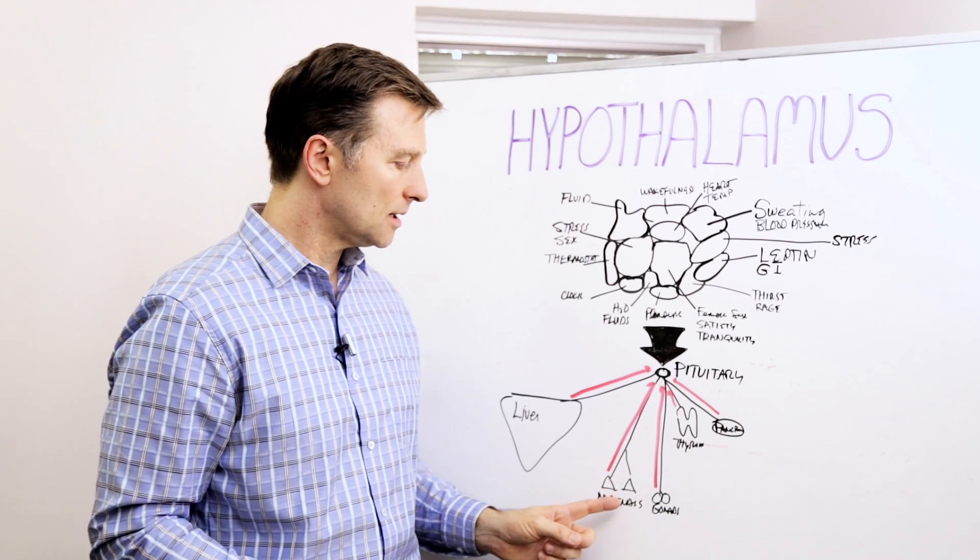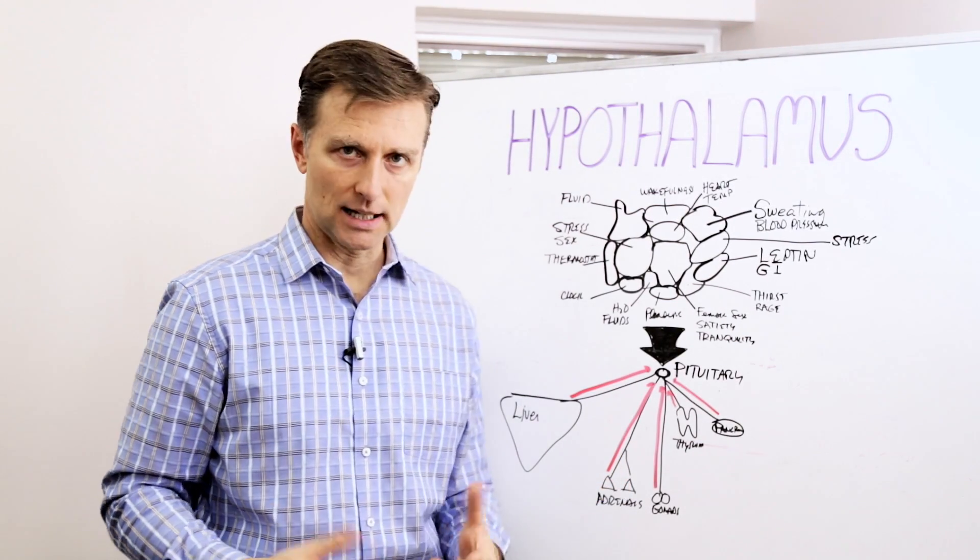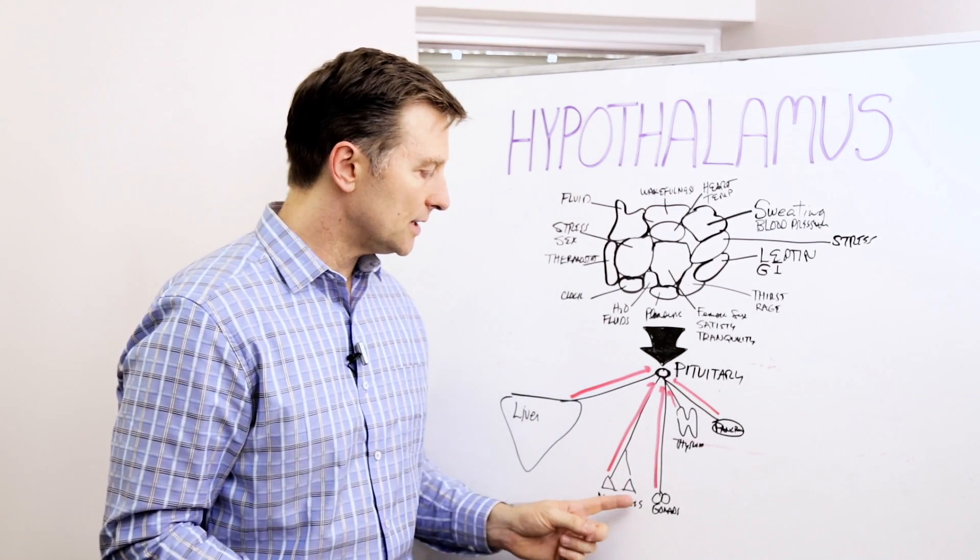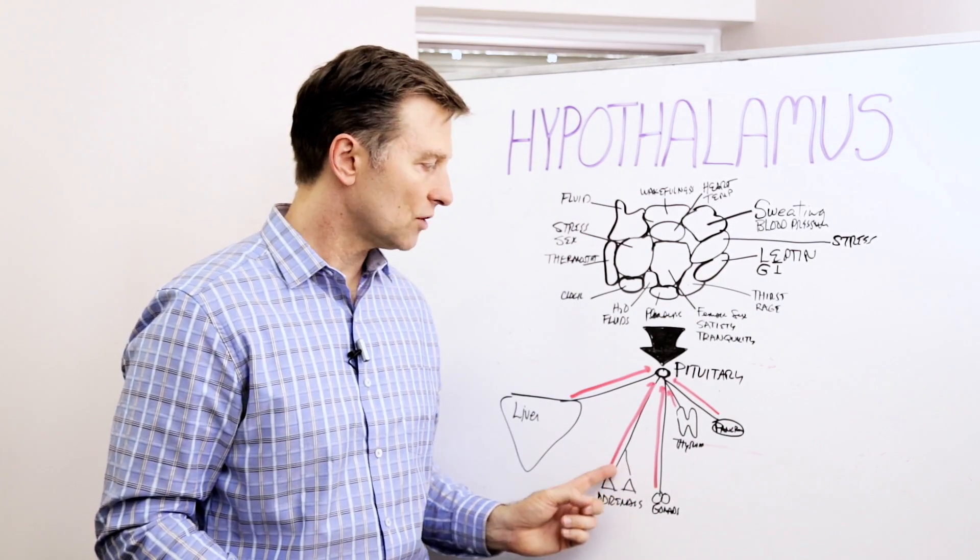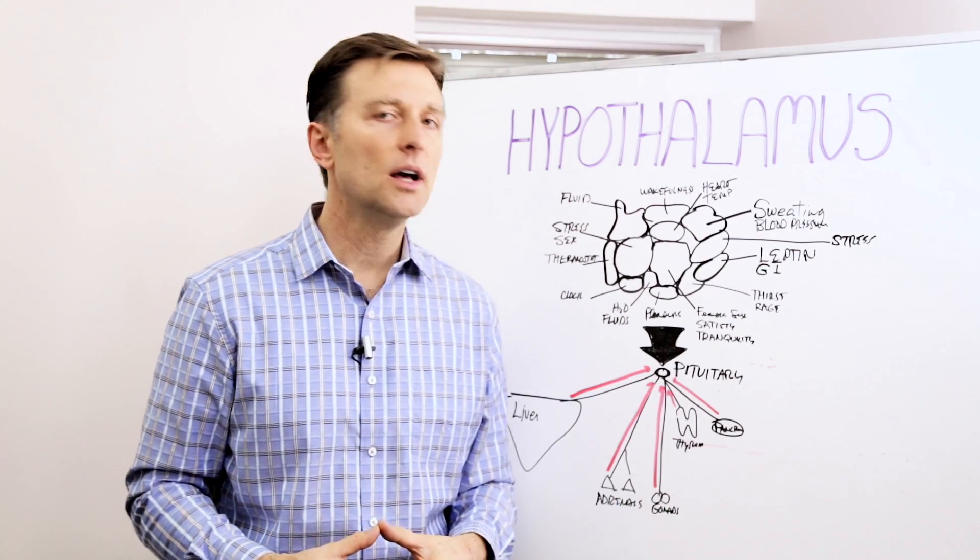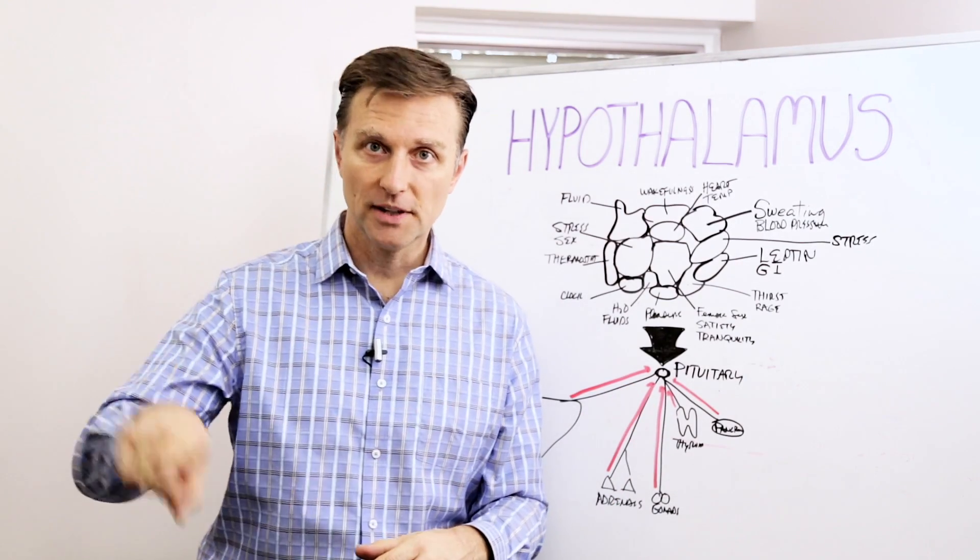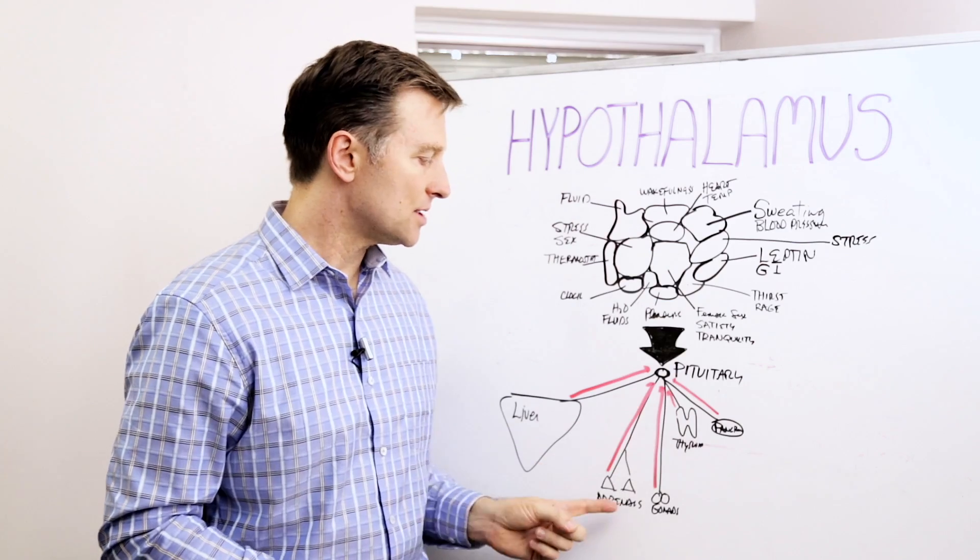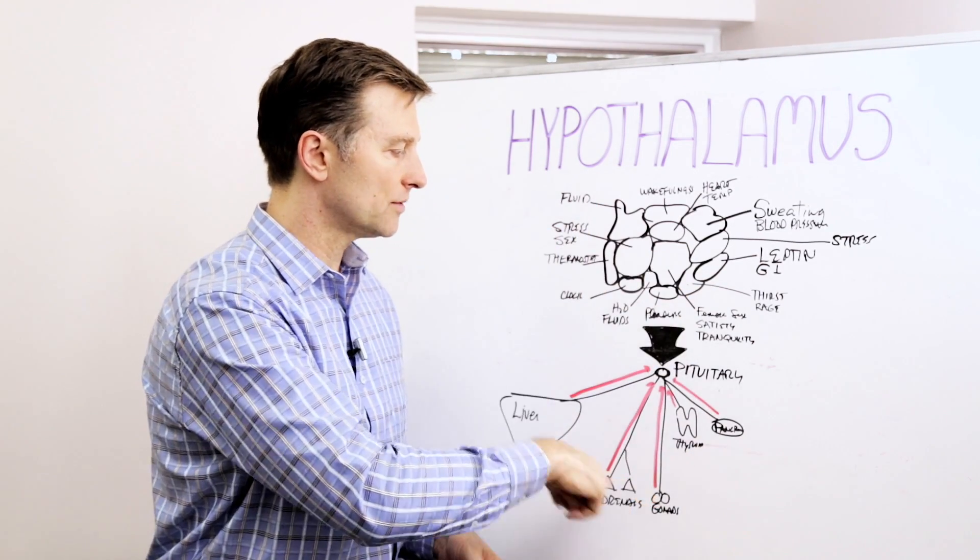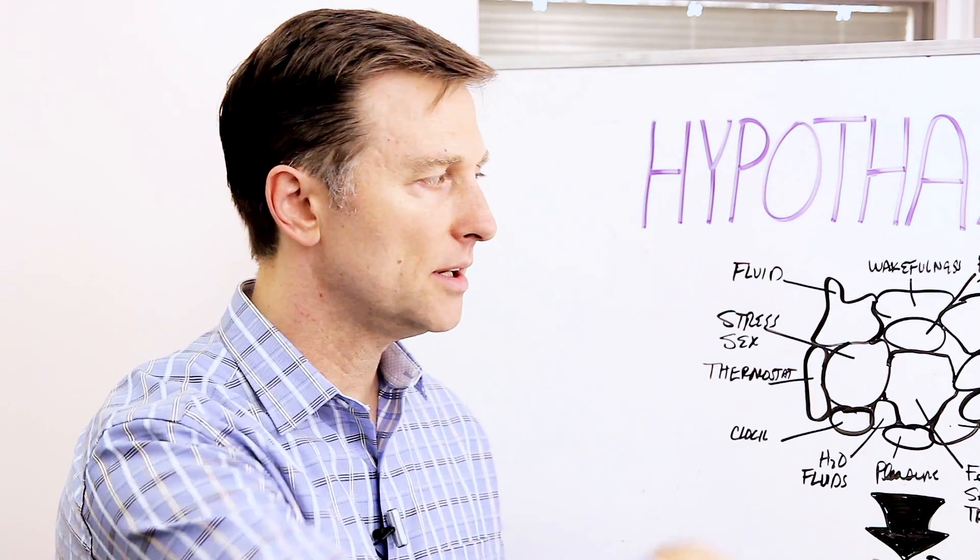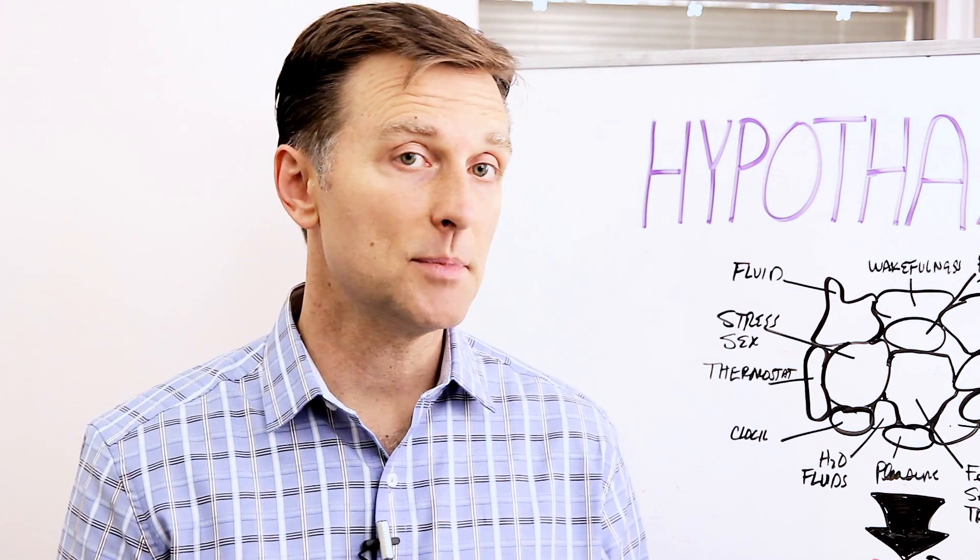And then once the messages are given to adrenal, for example, then the adrenal has to perform that function. So when it does it, then it sends another signal back up, letting the pituitary know, okay, we did it. So that feedback loop connects and then the message can turn off. So they have this entire communication system that's going from down here all the way back up here all day long. And it happens really, really fast.